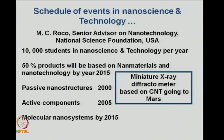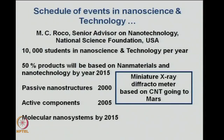The senior advisor on nanotechnology of the National Science Foundation commented in his 2005–2006 lecture that we would need around 10,000 students in nanoscience and technology per year, and that 50 percent of products will be based on nanoscience and nanotechnology by the year 2015. Many devices are already being manufactured, like passive nanostructures and active components, and miniature X-ray diffractometers based on carbon nanotubes have already been made for a space mission to Mars.